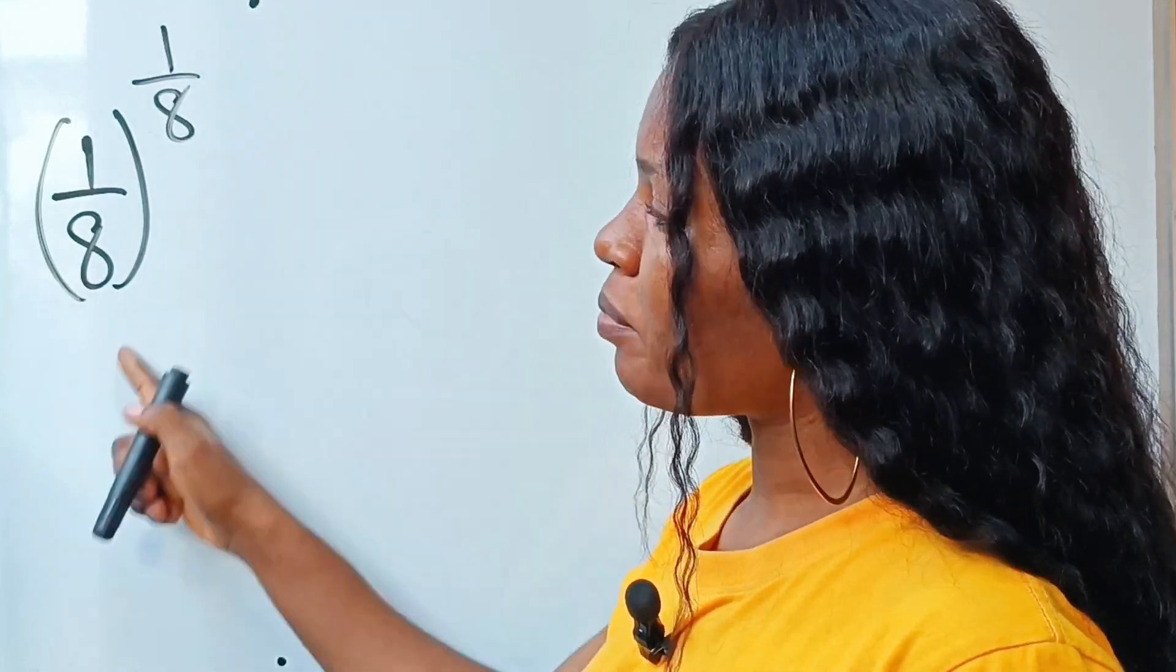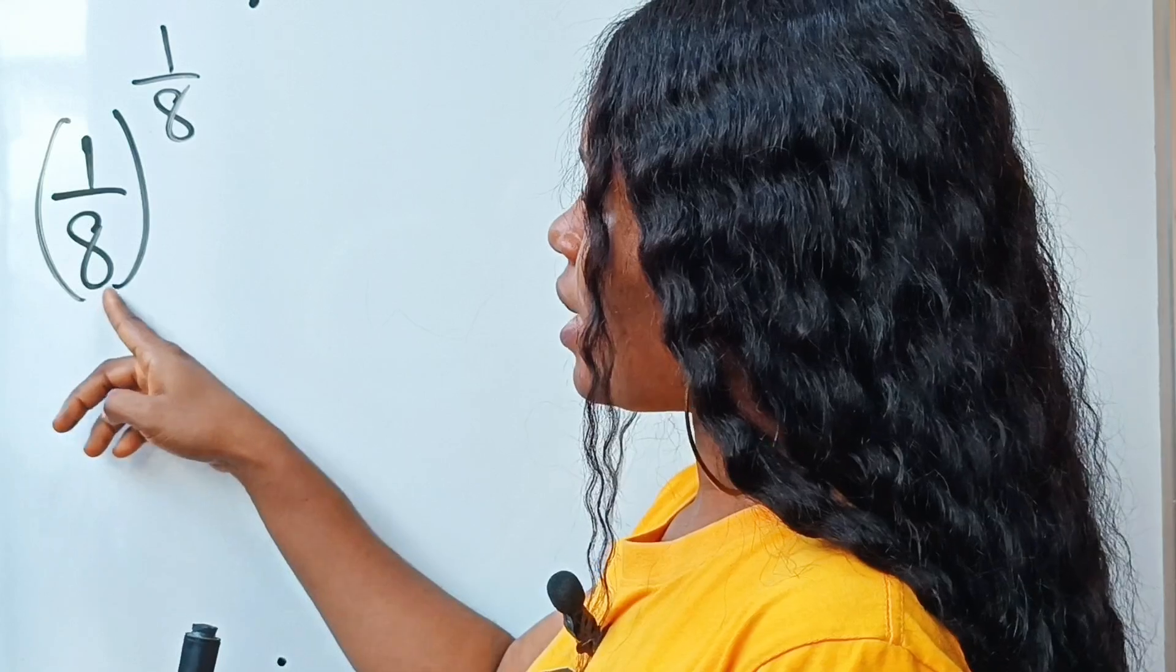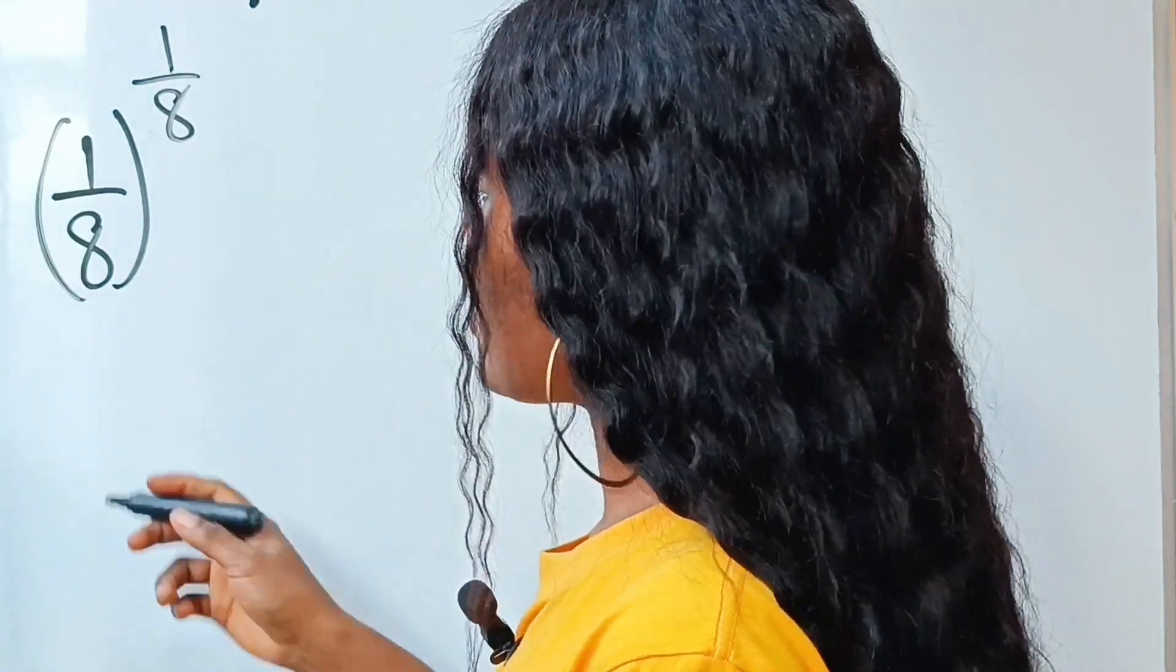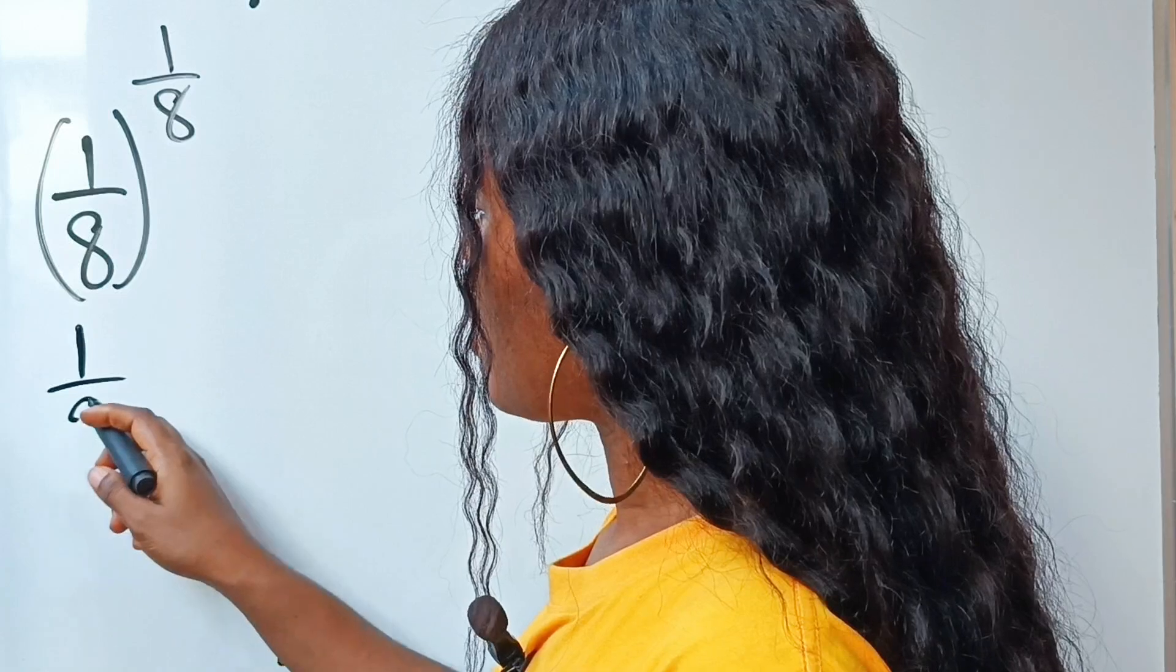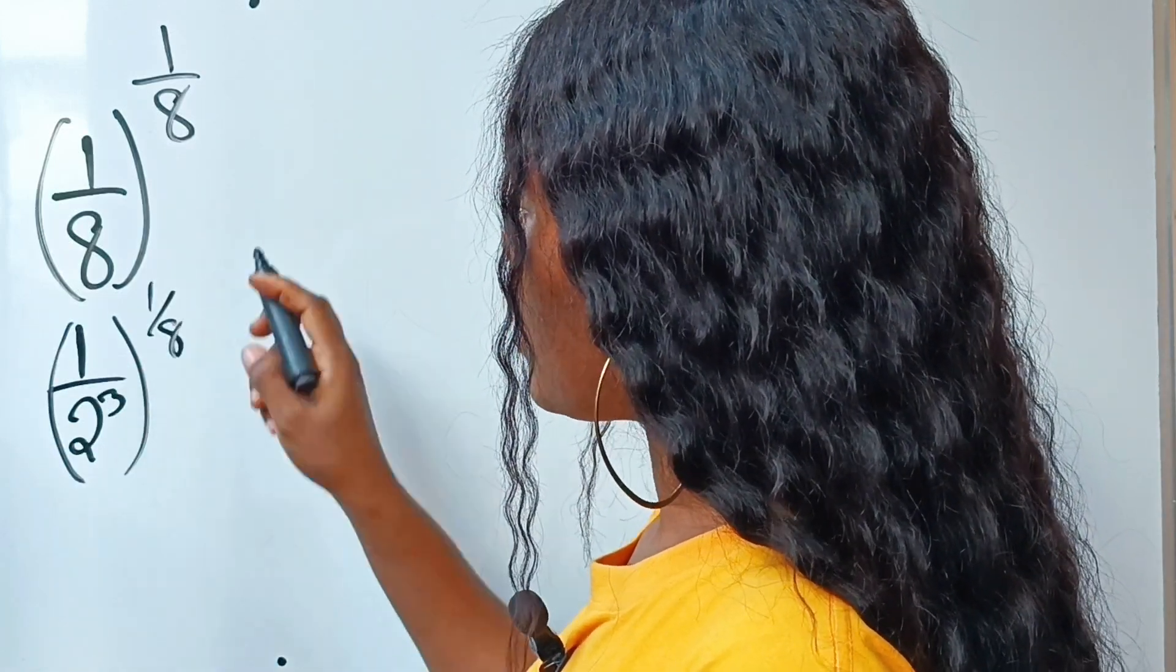So today we are asked to simplify this. First of all, we know that 8 can be written as 2 to the power of 3. So we can write this as 1 over 2 raised to the power of 3 raised to the power of 1 over 8.